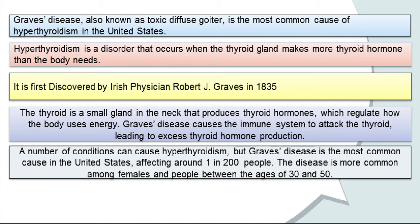Graves' disease was first discovered by Irish physician Robert J. Graves in 1835. The thyroid is a small gland in the neck which produces thyroid hormone to regulate the body's energy mechanism. As Graves' disease is an autoimmune disorder that attacks the thyroid gland, leading to excess thyroid hormone production. Graves' disease affects one in 200 people in the US, most commonly between ages 30 to 50, and is more common in females than males.